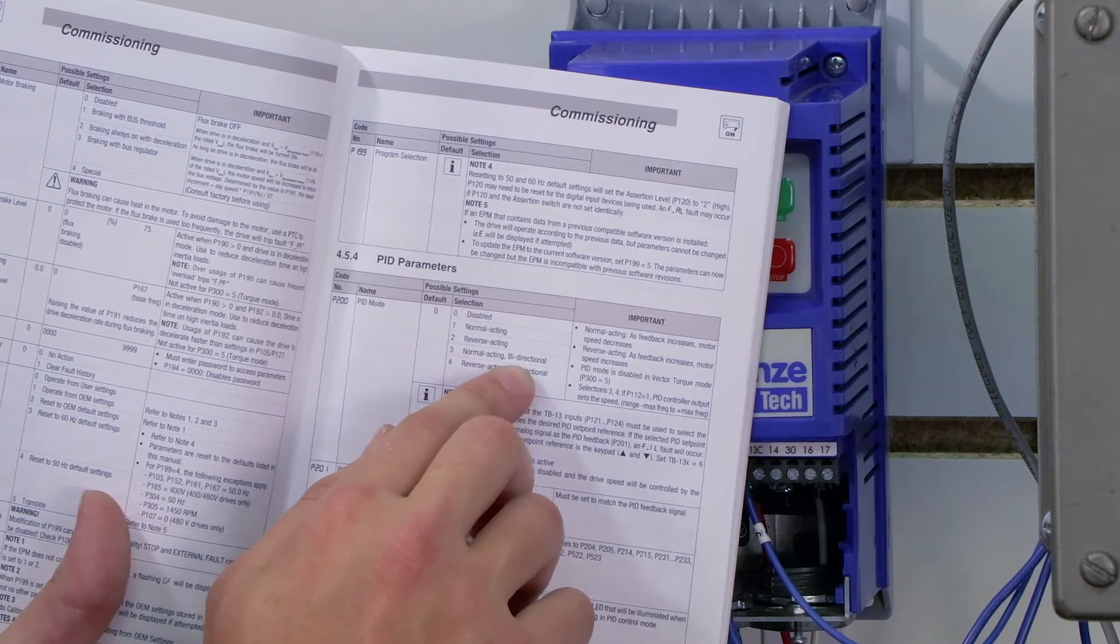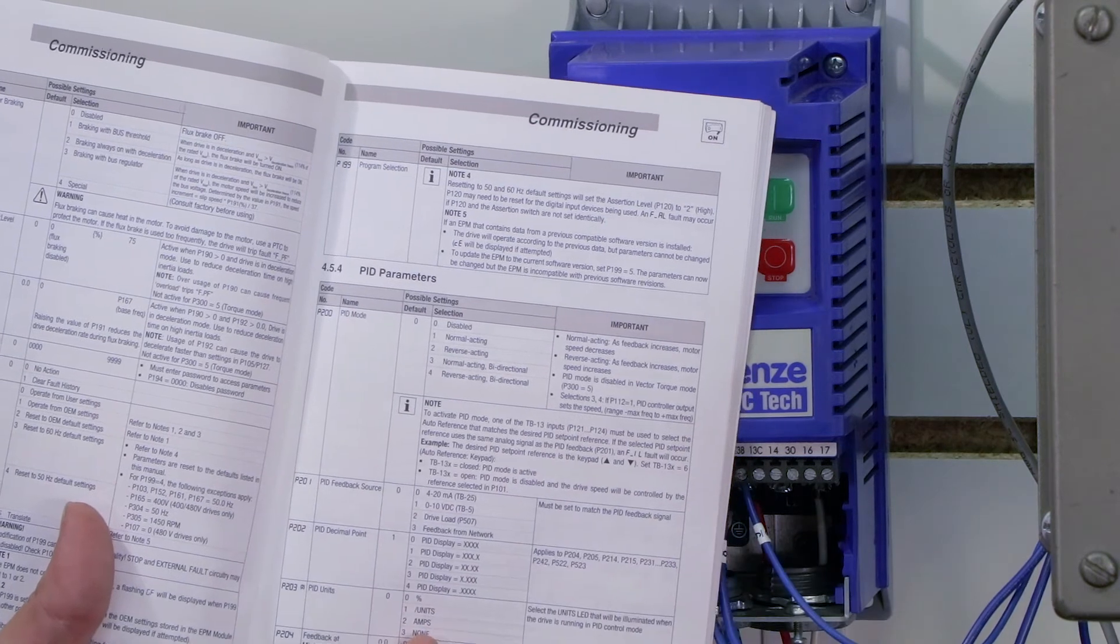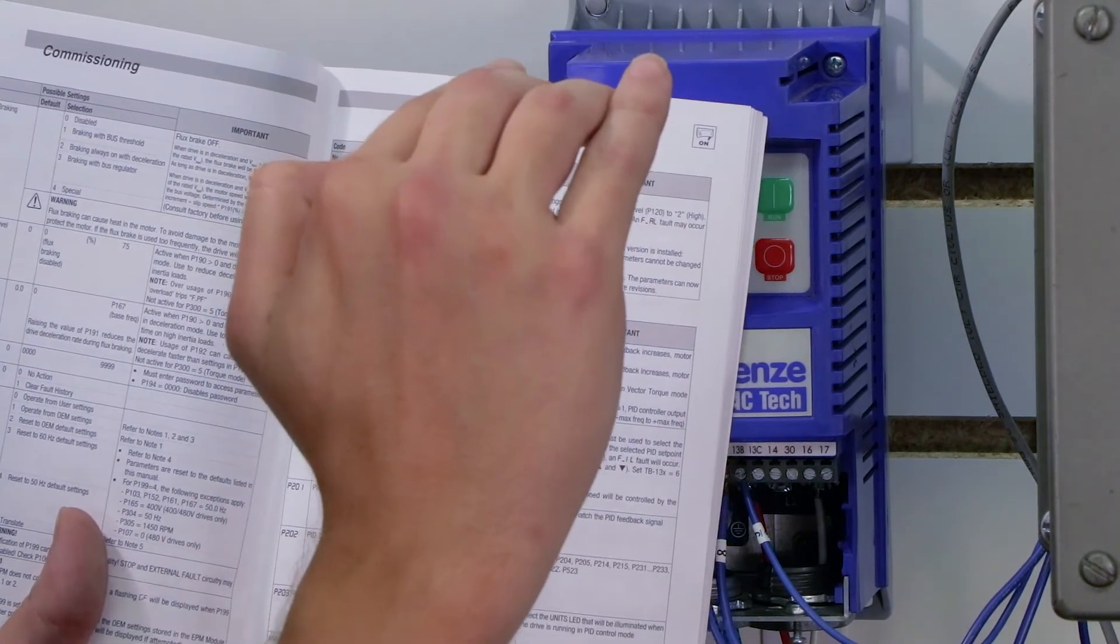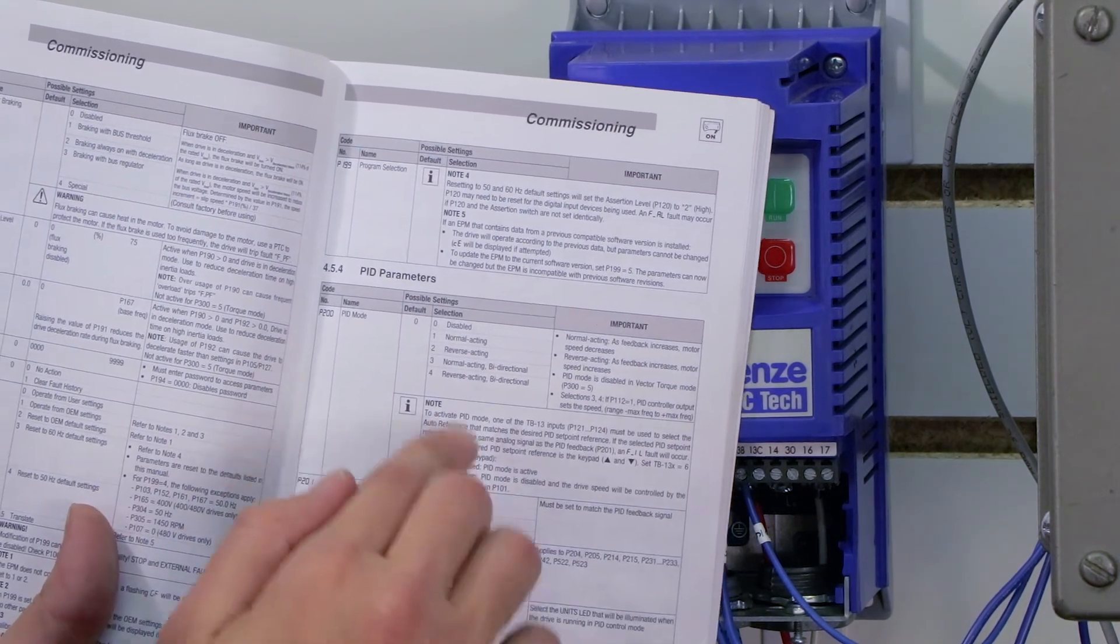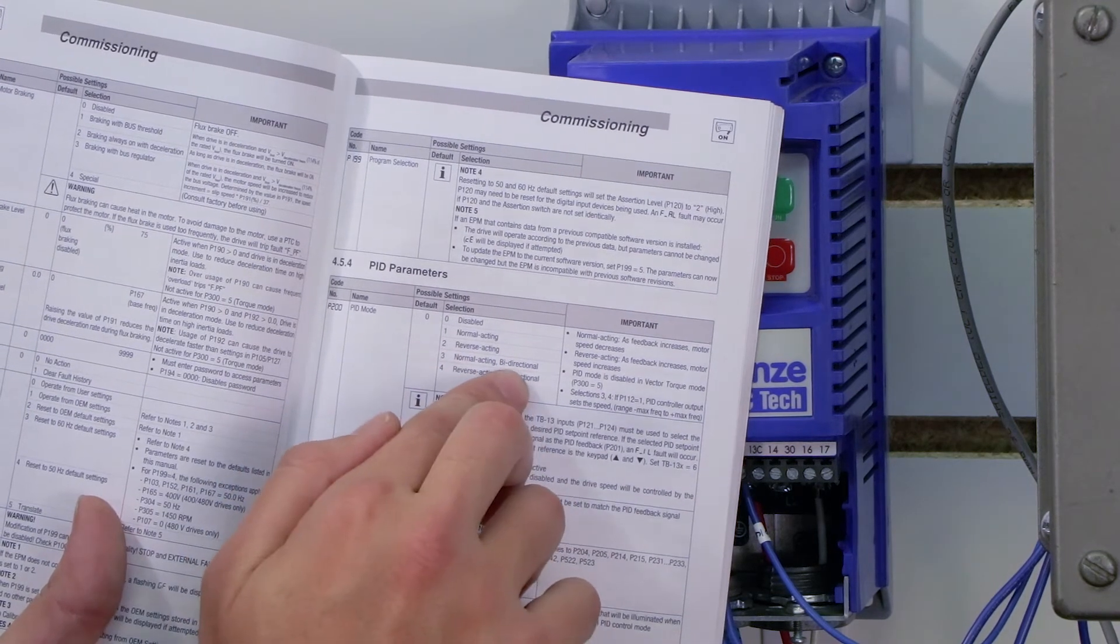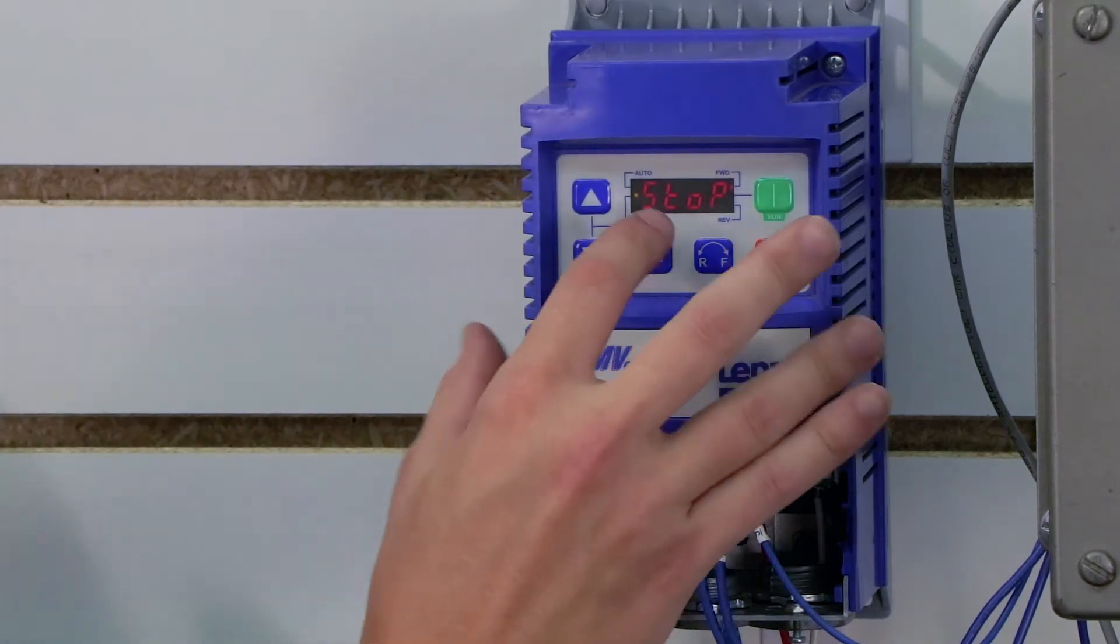Now I can also do normal acting bidirectional, which means that if for some reason my signal goes in the opposite direction from my set point, in other words, if I overshoot, maybe my tank gets too full, and my set point's 50 and I get 70, I can actually have the motor run in the opposite direction to empty water. So that's one option as well. But in my case, I don't need it to try to empty water. I have a one-way pump. I don't have a bidirectional pump. So I'm still going to set mine to normal acting.